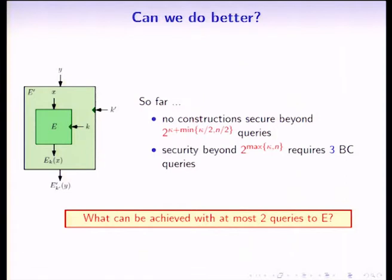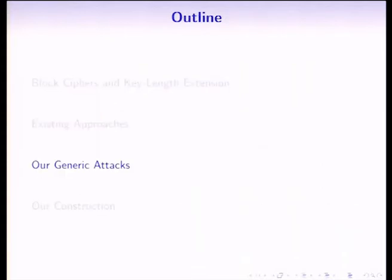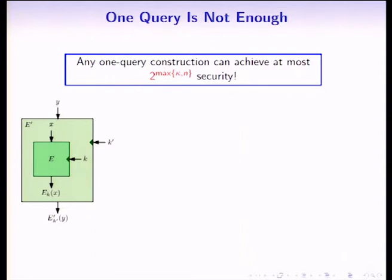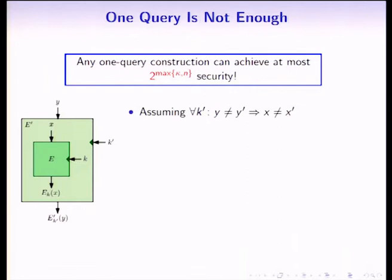Let me show what we cannot achieve, describing generic attacks from the paper. First, we focus on one-query constructions — those issuing only a single query to the underlying block cipher. We show none of these can provide a reasonable security increase; they cannot be secure beyond 2^max(kpa, n). I will sketch the proof for the special case of injective constructions, where for a fixed key, distinct inputs imply distinct queries to the underlying block cipher.